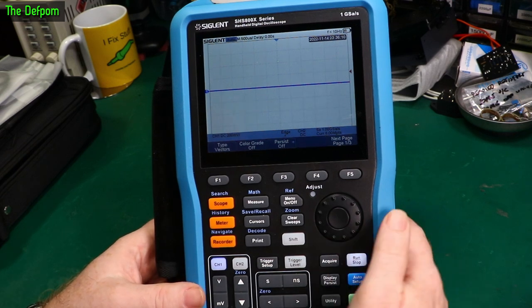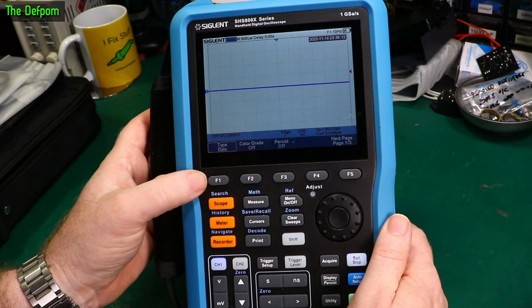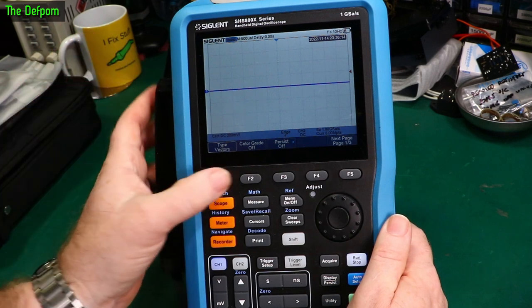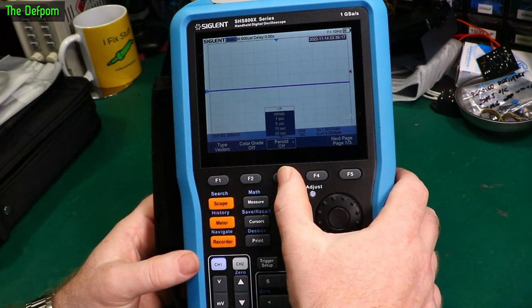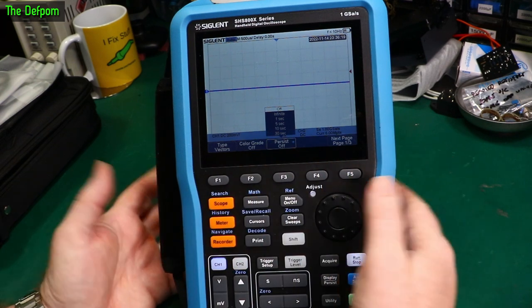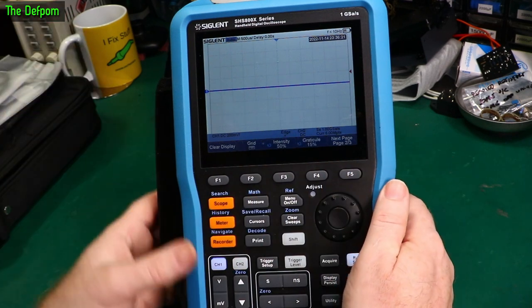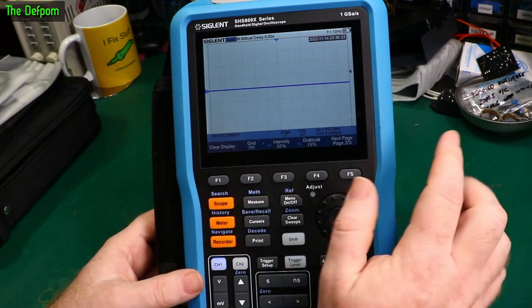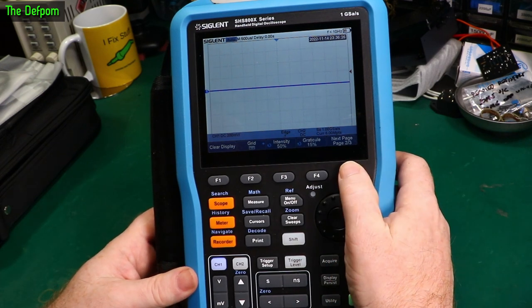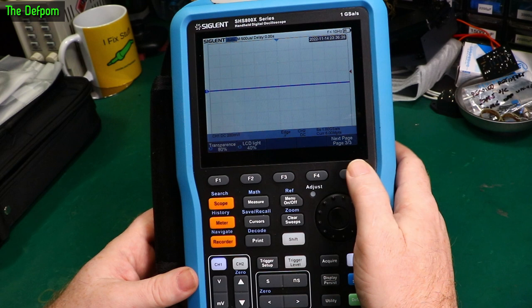So that is the utility menu. Let's look at the display menu. Vector display, dot display. Usual stuff. Color gradients, on or off. Persistence. Selectable. Just like you do on the main benchtop oscilloscopes. The user interface is basically the same as the desktop oscilloscopes. It's actually quite nice. All the same settings on that.